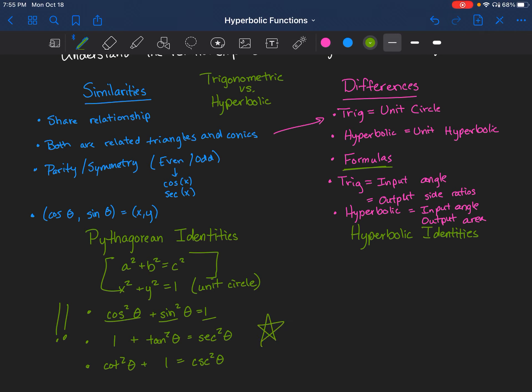However, the hyperbolic identities are a little bit different because we don't really have the Pythagorean theorem anymore with hyperbolic functions, but we do have the equation of the unit hyperbola, which the only difference is instead of it being x squared plus y squared, it's going to be x squared minus y squared equals one. And that is, again, the equation of the unit hyperbola.